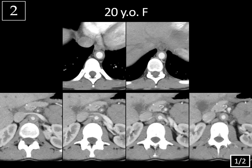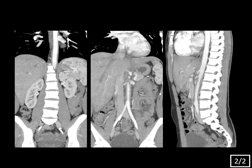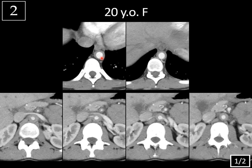Case two, slide one of two: 20-year-old female, CT angiogram. Slide two of two: coronal and sagittal reformatted images. On these images of the lower thoracic aorta, there's very marked, homogeneously hyperdense thickening of the aortic wall. Moving into the abdominal aorta, the thickening is even more pronounced with associated luminal narrowing. The thickening also continues along the superior mesenteric artery with some luminal narrowing, and there's surrounding thickening at the origins of the renal arteries. In a female patient of this age, this is typical for Takayasu arteritis.